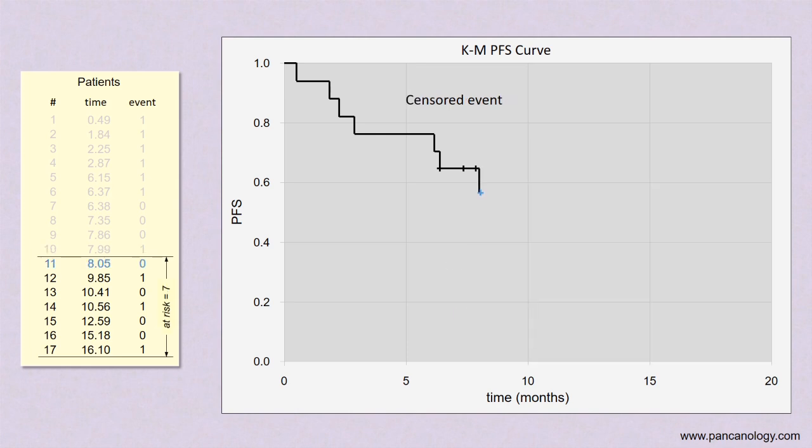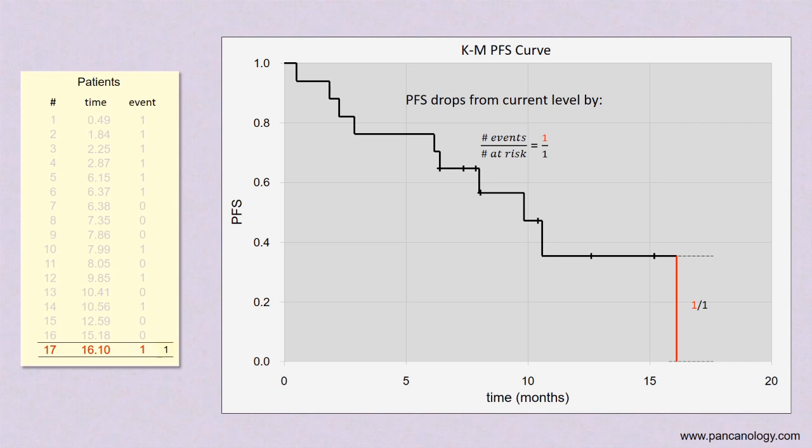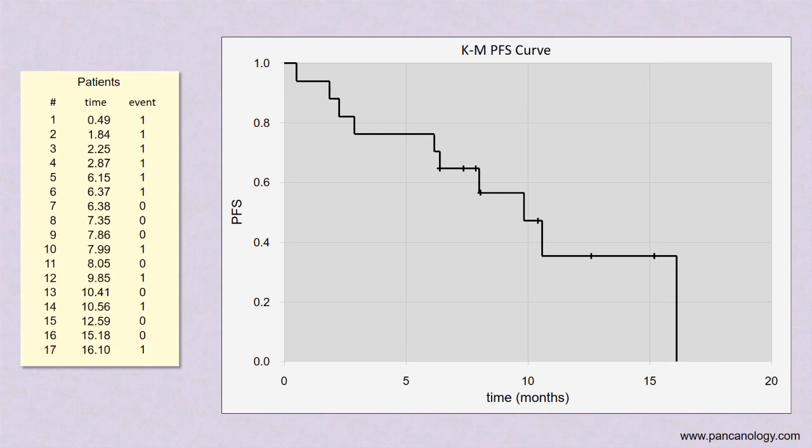The next censored patient is indicated by a mark. A single event from six patients at risk means we drop by 1/6th. Because these prior censored patients have been removed, the steps are starting to get larger. Another censored patient. One event from four at risk. Two more censored patients. And the final patient has an event dropping our PFS curve all the way down to zero. Everyone has either progressed or was censored from the trial.